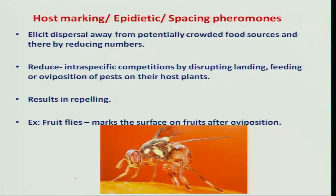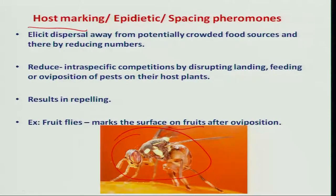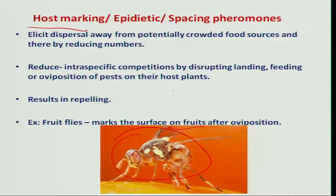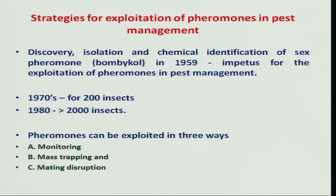A little bit of study is also done on host marking pheromones. Here is one example of fruit fly, wherein after ovipositing on some fruits, other fruit flies can avoid the same host from oviposition and can oviposit in other host plants, thereby avoiding intercompetition between two insects.